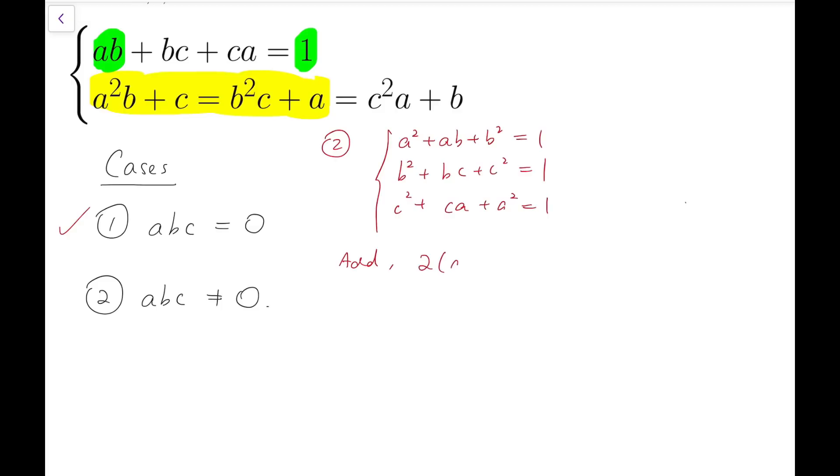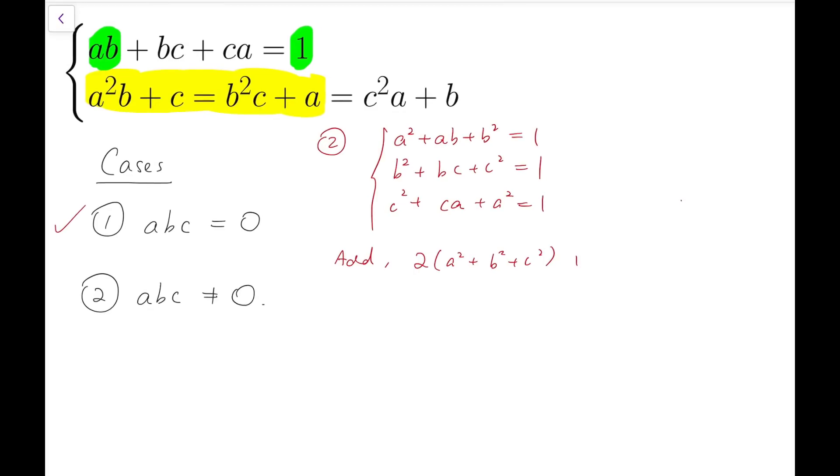We'll have two times (a² + b² + c²). They appear in different equations. Now we add them up, we gather them all together, and adding ab + bc + ca, we're equal to 1 + 1 + 1, which is 3. So now we notice that this is actually 1, so we can move that to the other side and divide by 2. So we have a² + b² + c² equals 1.